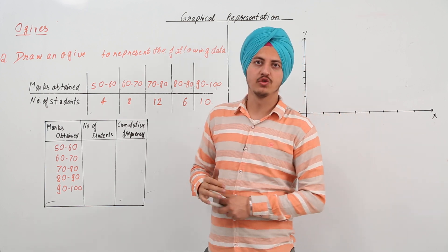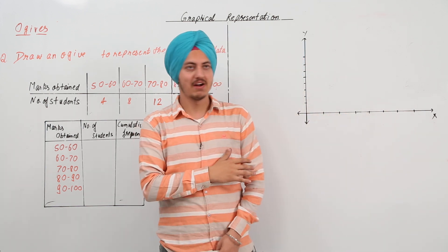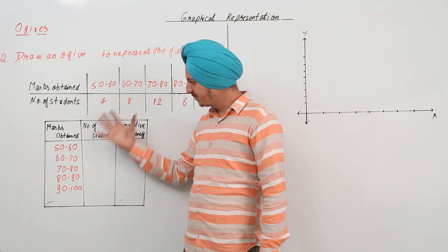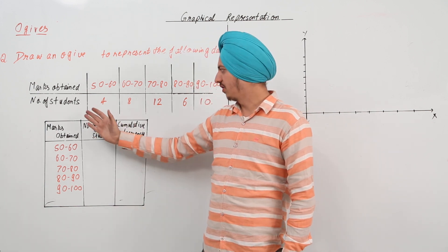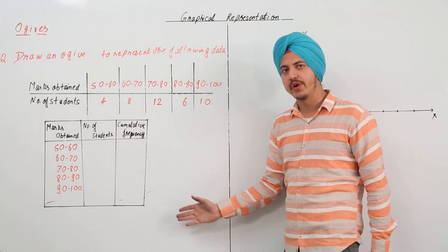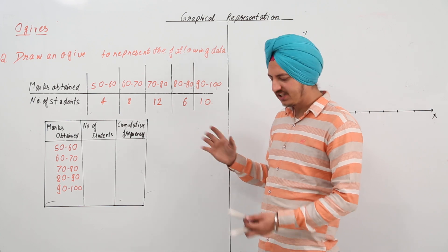Now, in an ogive, what we have to do first is, before touching the graph, we have to first make another table that is of the marks obtained, number of students and we have to find out the cumulative frequency. I'll tell you what this means.